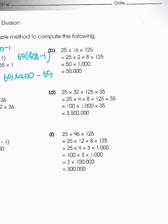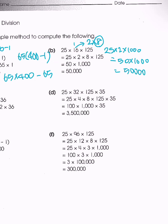For problem B, we have 25 times 16 times 125. We can break down 16 into 2 times 8. Since 8 times 125 equals 1,000, we're doing 25 times 2 times 1,000, which equals 50 times 1,000 = 50,000. Alternatively, break 16 into 4 times 4: 25 times 4 equals 100, so 100 times 4 times 125 = 500 times 100 = 50,000.